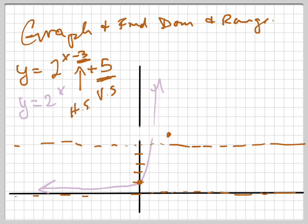That point that was right there is now right there. And it's going to go up exponentially and down toward the line y equals 5, which is my horizontal asymptote. All right, so now let's answer the questions. There's our graph. Let's answer the questions.